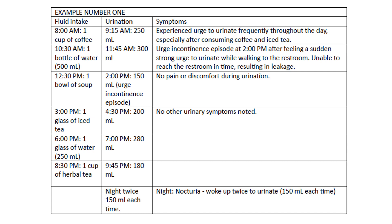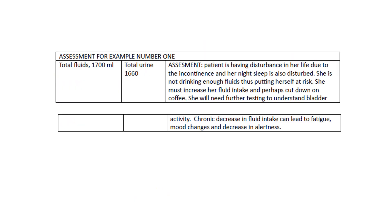She also had nocturia twice during the night, passing 150 ml each time. When assessing this diary, you calculate total fluid intake, total urine output, and evaluate with symptoms. In this case, the patient is not taking in enough fluids — she is passing as much urine as she takes in, indicating her kidneys are fine, but she is experiencing incontinence and disturbed night sleep. By not drinking enough fluids, she is putting herself at risk.